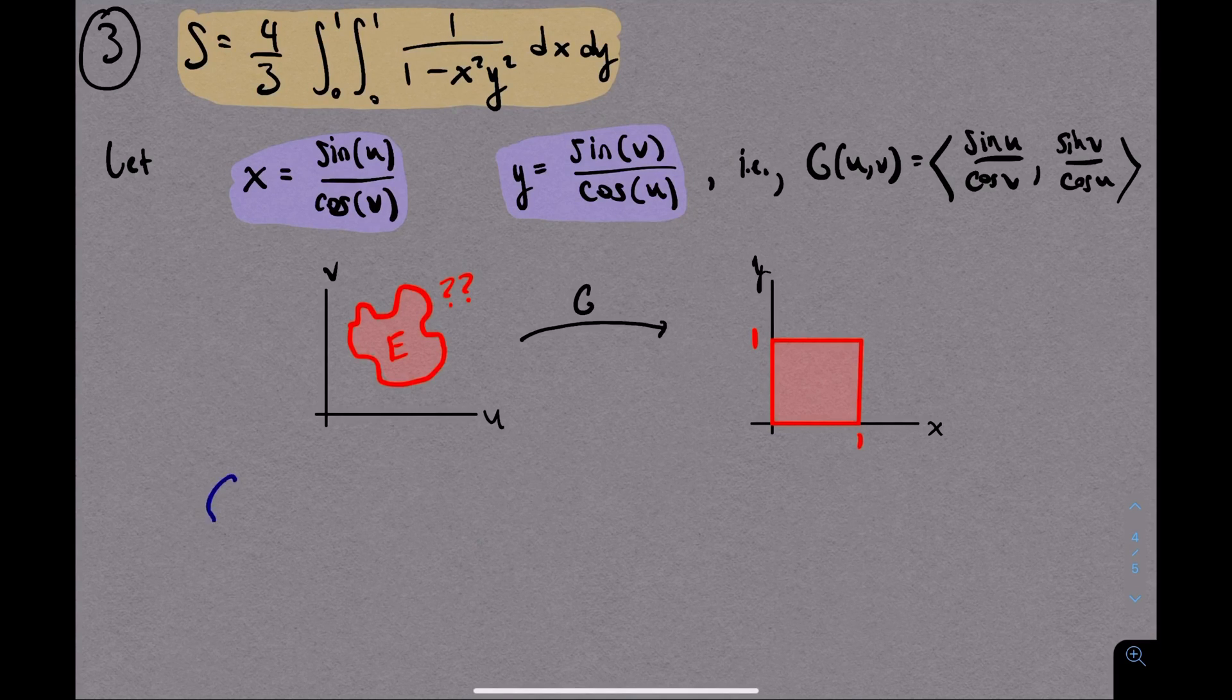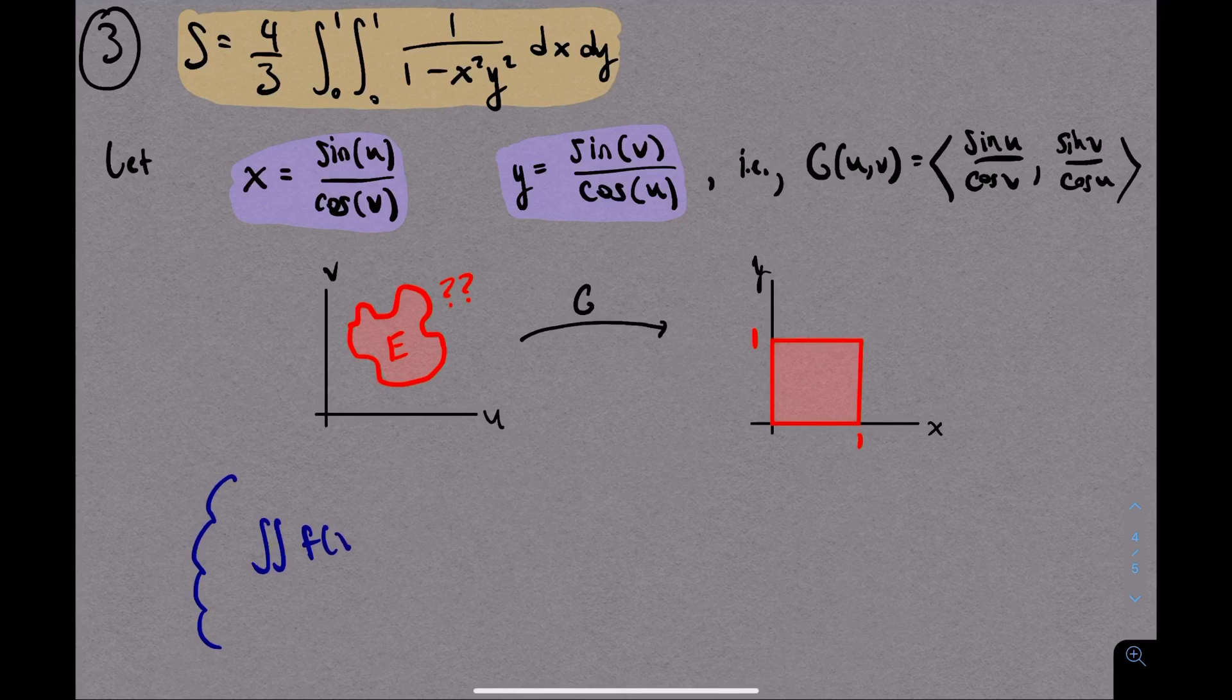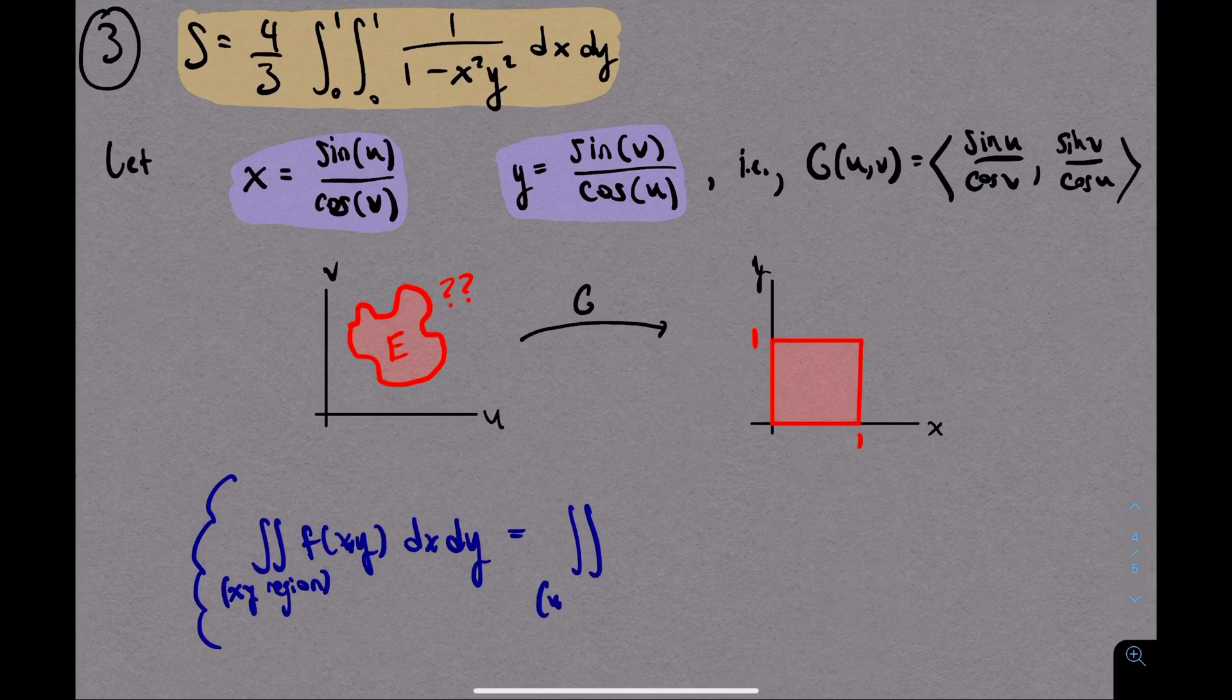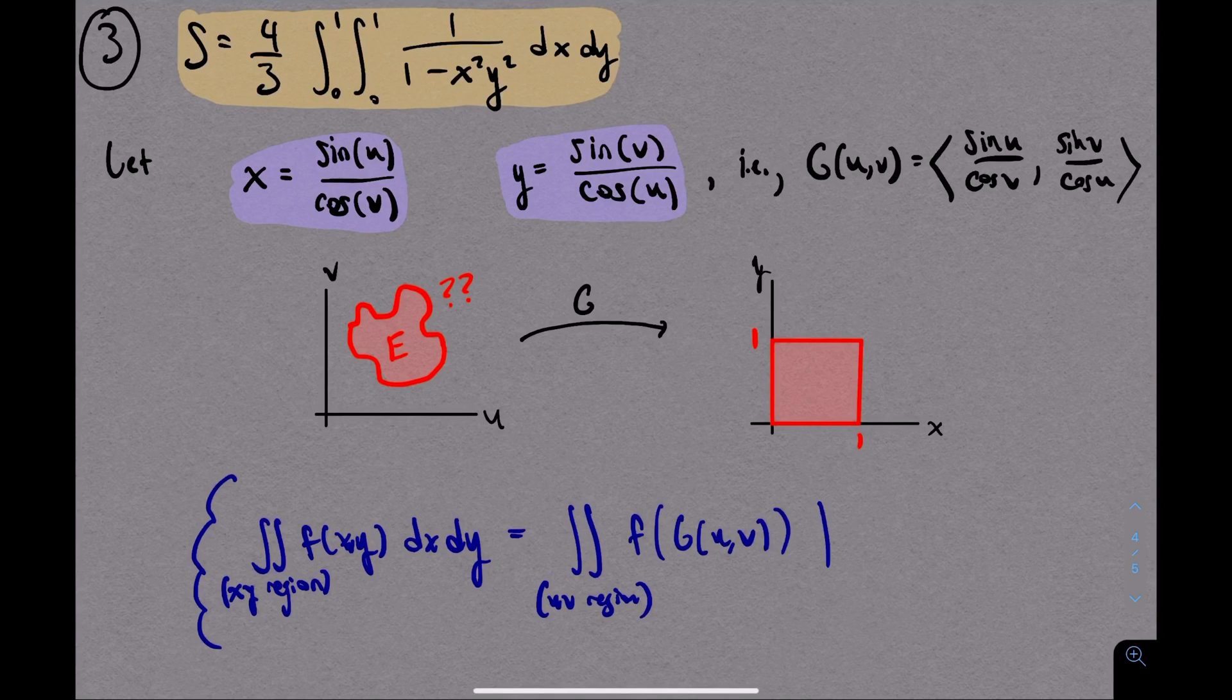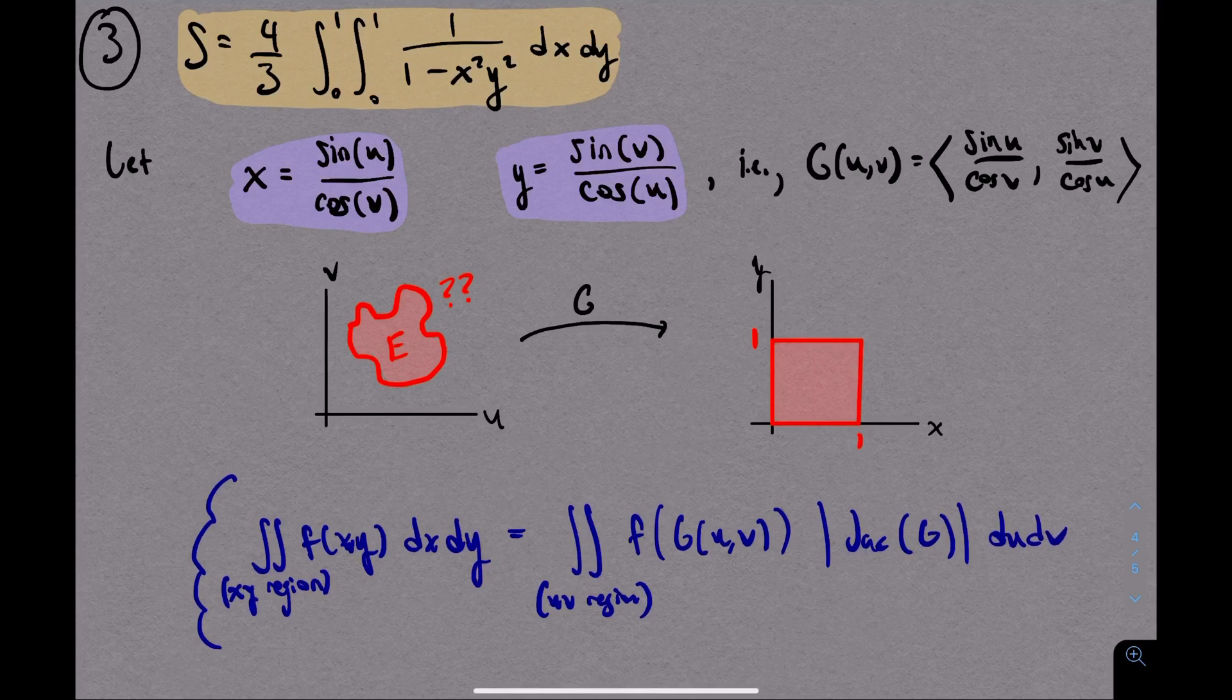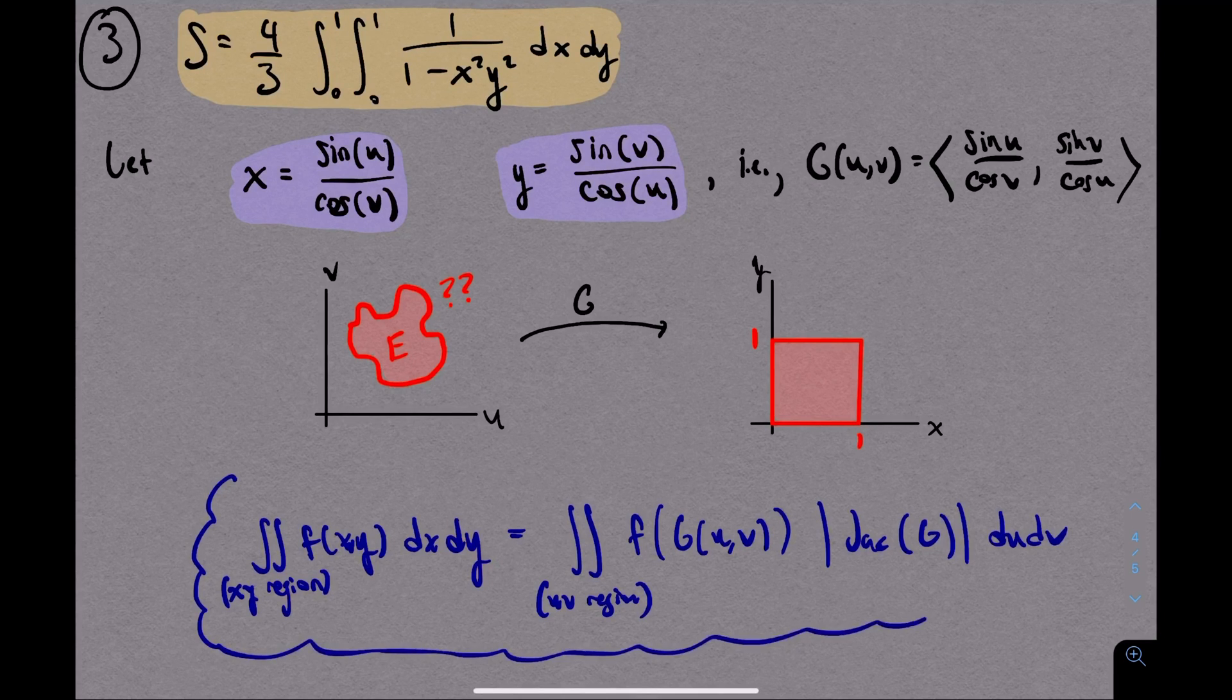Next, let me remind you how to change variables in a double integral like this. When we start out with an integral in the xy world, to change it, we have to change the bounds, we have to change the actual function that we're integrating, and we have to change the differentials. And when you change the differentials in an integral like this, this means multiplying by the absolute value of the Jacobian of g.